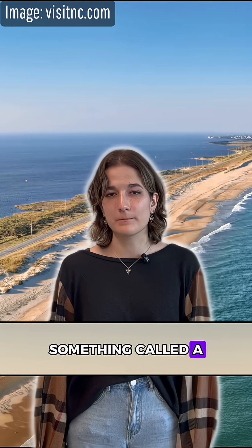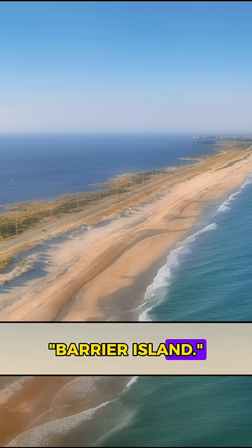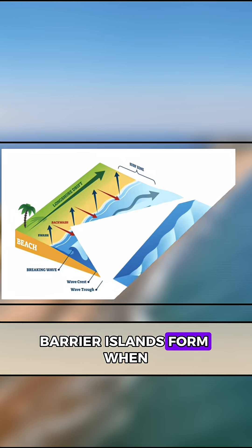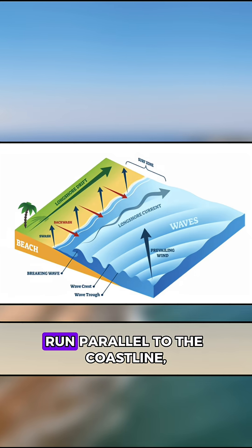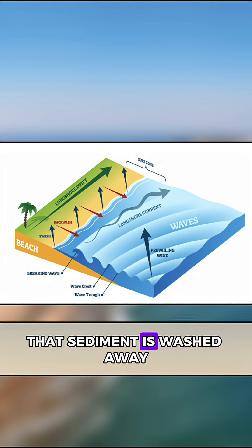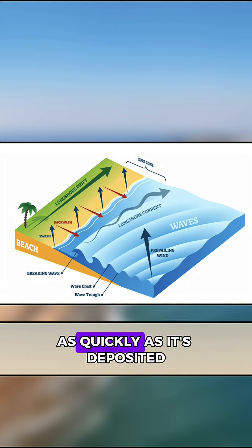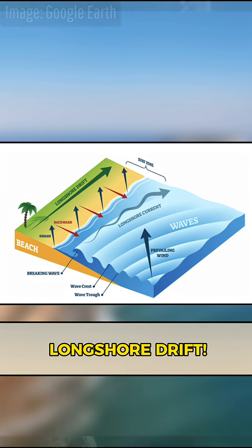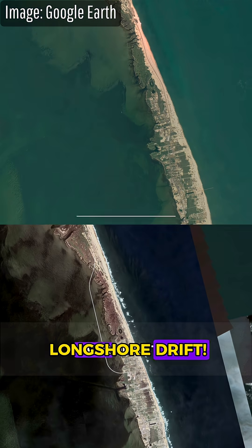The Outer Banks is something called a barrier island. Barrier islands form when ocean waves run parallel to the coastline, depositing sediment. That sediment is washed away as quickly as it's deposited through a process called longshore drift.